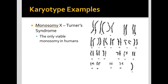This is a monosomy at X — that's what we mean by at a specific location. This is called Turner Syndrome. It is the only monosomy that someone can live with, and obviously someone who has Turner Syndrome is going to be female. They don't have a Y, so they will be female.